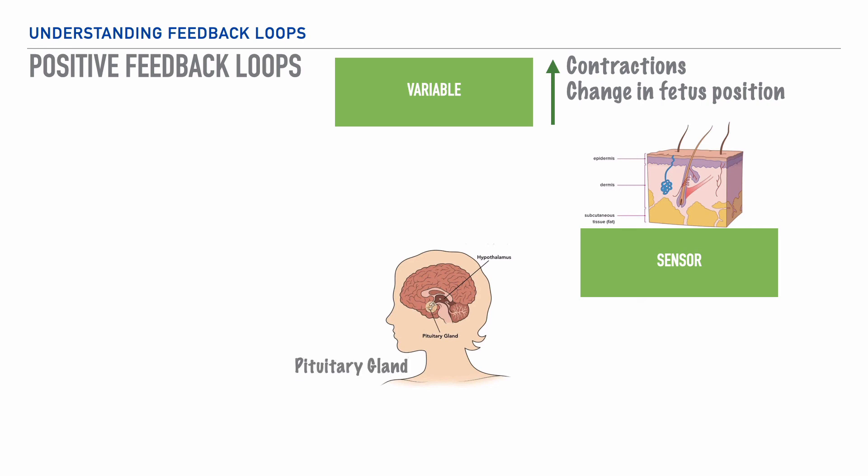Now, the role of oxytocin stimulates more uterine contractions, helping the body to further release the fetus. And because the pituitary gland is responsible for regulating the birthing process, we refer to it in the brain as the control center.